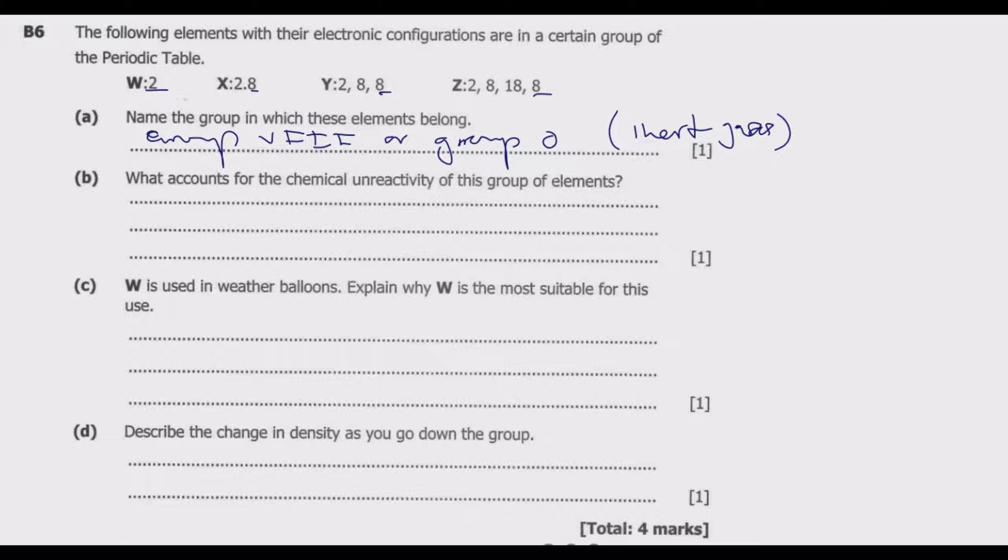For example, if you look at W, W has one shell so this is period 1. This has two shells (2 and 8) so this is period 2. This is period 3. This has 1, 2, 3, 4 shells so this is from period 4.